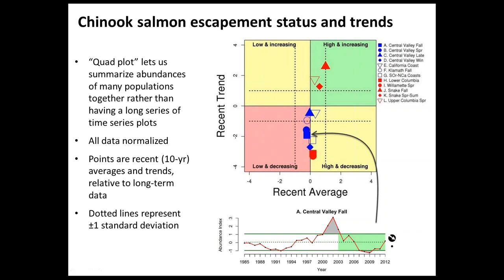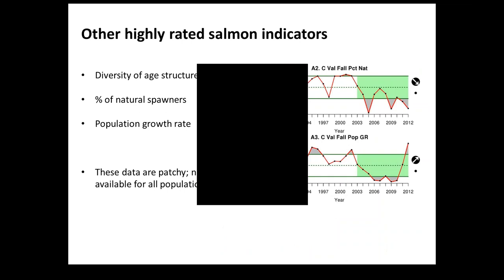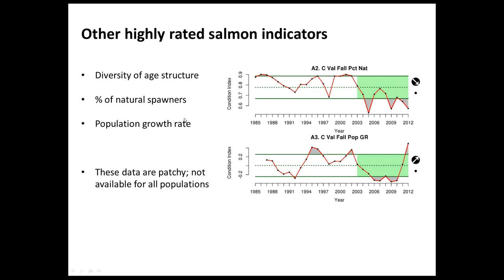Other salmon indicators include measures such as diversity of age structure in returning adults, the percent of returning adults that are natural versus hatchery origin, and population growth rates. These are valuable but patchy — not available for every major population area being monitored. For the Central Valley, for example, two different indicators move in opposite directions, giving some idea of mechanisms behind abundance changes shown in the previous plot.